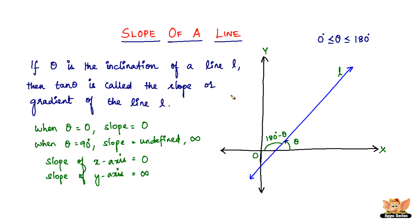So that is what this video was all about. The key takeaways: the slope of a line is measured by tan theta, denoted M = tan theta — this is the general formula. Substitute the angle of inclination to find M. There are two special conditions: inclination of 0 degrees gives slope 0, and inclination of 90 degrees gives undefined slope. In forthcoming videos, we'll look at how to find the slope when you don't have the inclination of the line.